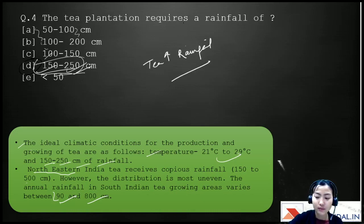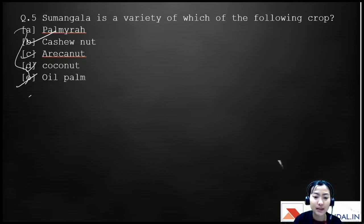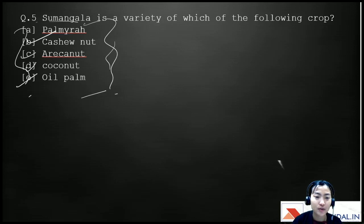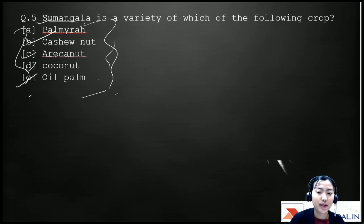Our last question: Sumangala is a variety of which of the following? A) Palmyra, B) Cashew nut, C) Areca nut, D) Coconut, E) Oil palm. I'd like you all to answer in the comment section — it's a very famous variety. Please drop your answer in the comments so I can know whether you are aware of the varieties.